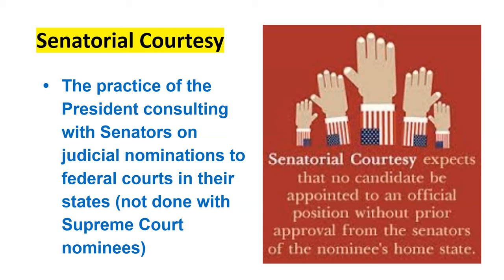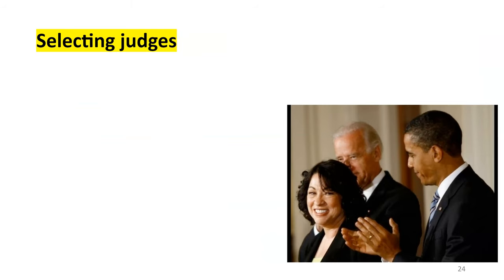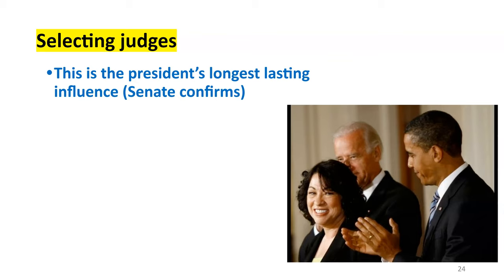Senatorial courtesy — we used to call it the blue slips — the idea that you put on a blue slip the names of people you're interested in considering, to get a thumbs up or thumbs down from the senators from those states as to whether they would be good candidates. In selecting judges, we mentioned the Sotomayor situation — the Senate is confirming them. This is going to be the president's most important and most lasting decision. A lot of what they do lasts throughout their term, but the Supreme Court is a big one — the people you name to that court carry your legacy for decades.